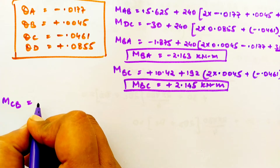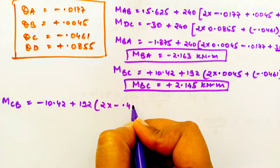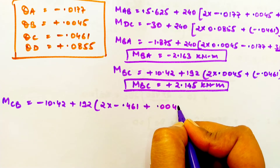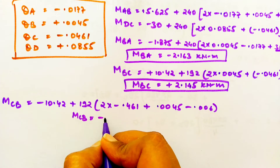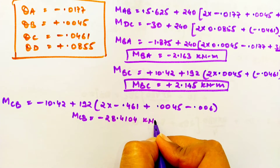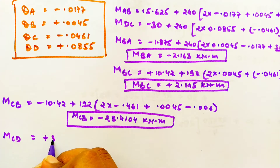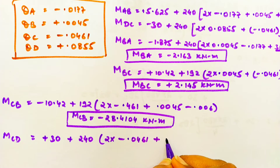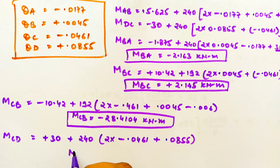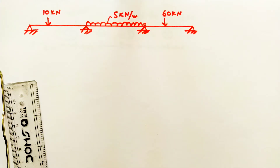Now checking MBA: putting everything into the equation gives −2.163 kN·m. Checking MBC gives a positive value such that MBA + MBC ≈ 0, confirming correctness. Checking MCB and MCD — MCB comes out to −28 point something, and MCD comes out to positive 28.39, which is approximately zero. A difference less than 0.5 is acceptable.